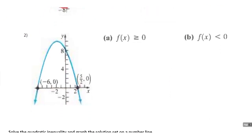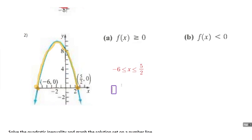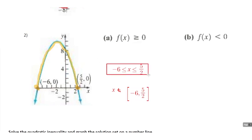Number two. Part a says when is f of x greater than or equal to 0? So that's going to be where the graph is above or on the x-axis. You can see that's going to be this section right up here — all of this part of the parabola is above the x-axis. We want to include the zeros as well. So the solution set is going to be x is in between and including negative 6 and 5 halves, pulling those straight from the x-intercepts. Using set notation, x is an element of the set with brackets — so we'd say negative 6 comma 5 halves. These are just two different ways of writing the same thing.